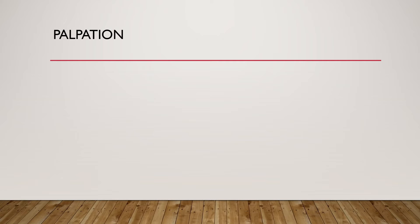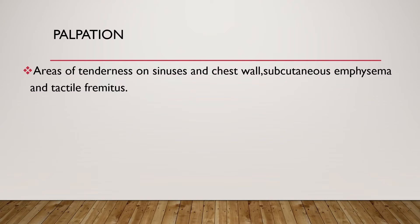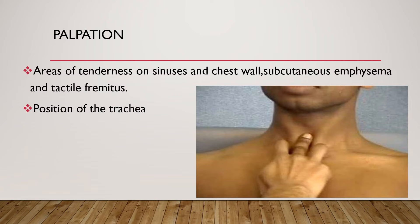The second part of respiratory system examination is palpation. Examine for areas of tenderness on the sinus and chest wall, check for crepitation for subcutaneous emphysema, and tactile fremitus should be checked — this can be done while an infant is crying in young children who are not cooperative. The position of the trachea should be checked by placing the middle finger in the suprasternal notch and comparing the space between the trachea and sternocleidomastoid muscle. In small infants, use only the index finger in the suprasternal notch and push backward to determine space on either side.